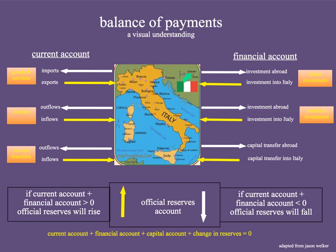So what's going on in the financial account? This is money that's being invested in other countries, leaving Italy. And this is money being invested from anywhere in the world into Italy. This is the outflow of money for portfolio investments — that means stocks, if you think of it simply. And this is the inflow of money in portfolios — cash coming into Italy for investments in stocks and bonds and things like that. This is something called the capital account, which gets super complicated, but I won't get into it now. This is the outflow of capital transfers to the rest of the world, and this is the inflow of capital transfers into Italy.